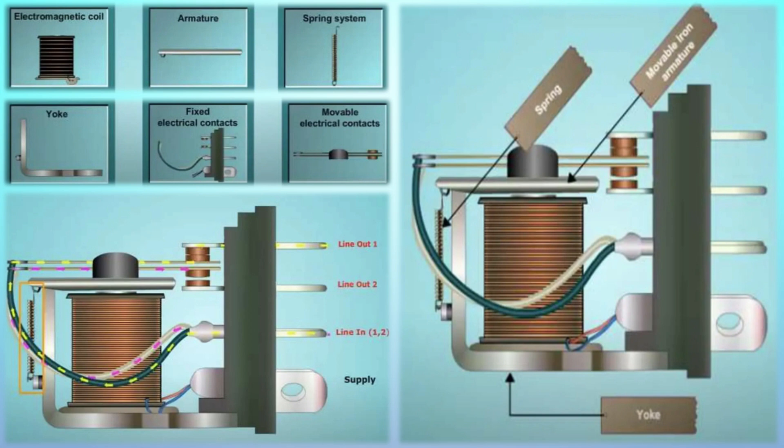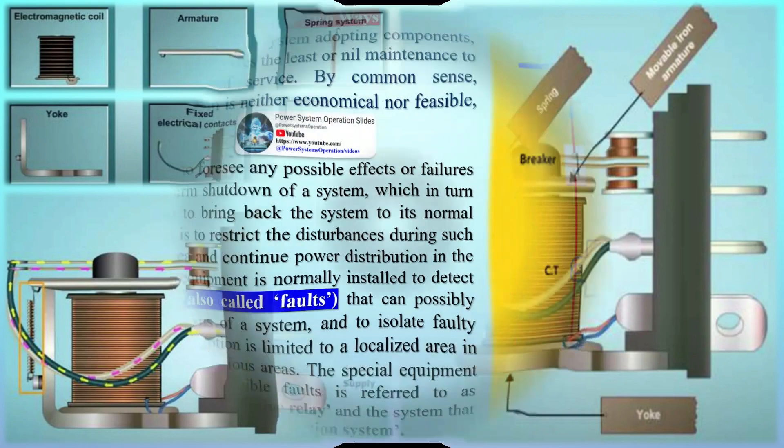Basic requirements of protection: a protection apparatus has three main function duties — safeguard the entire system to maintain continuity of supply, minimize damage and repair costs where it senses fault, and ensure safety of personnel. These requirements are necessary firstly for early detection and localization of faults, and secondly for prompt removal of faulty equipment from service.